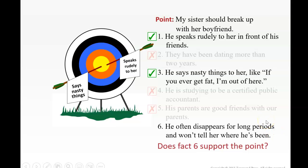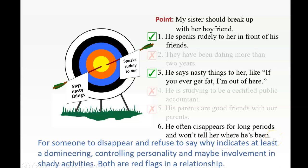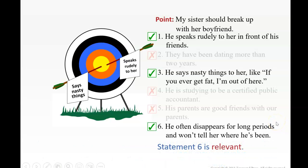Number six, he often disappears for long periods and won't tell her where he's been. Yeah, definitely break up with him quickly. He doesn't sound, he sounds like a loser. So it's definitely relevant. So if that were happening to my daughter, I would kick him to the curb. All right, so statement six is relevant. So if you take a look, one, three, and six, they're all giving reasons why she should break up with them. Two, four, and five are just too vague. They're off topic.